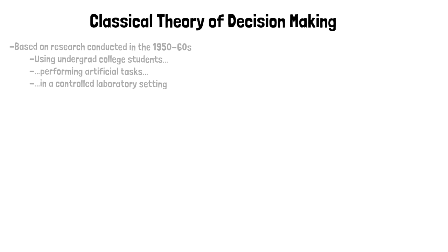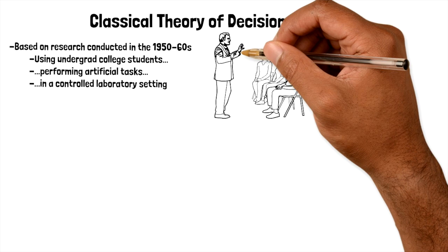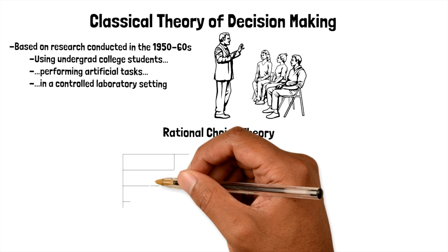But first let me give you some background. There were classical theories of decision-making dating back to the 1950s and 60s, and the research had used undergraduate college students who performed artificial tasks in controlled settings. And all this was part of rational choice theory.